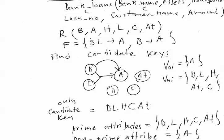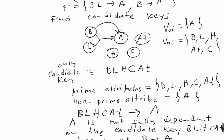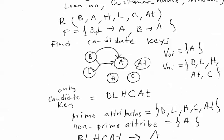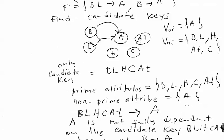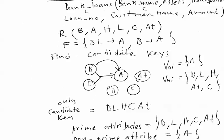For each functional dependency, we check the left-hand side and right-hand side. For BCNF, the left-hand side of every dependency must be a super key. The left-hand side of the first dependency is BL. Is BL a super key? No, because the candidate key is BLHCTA. So R is not in BCNF. We need to check every functional dependency — as soon as one left-hand side is not a super key, it's not BCNF. Then we go down to check 3NF.